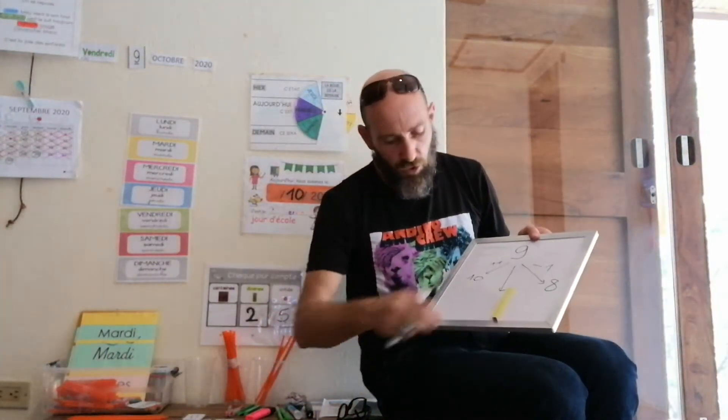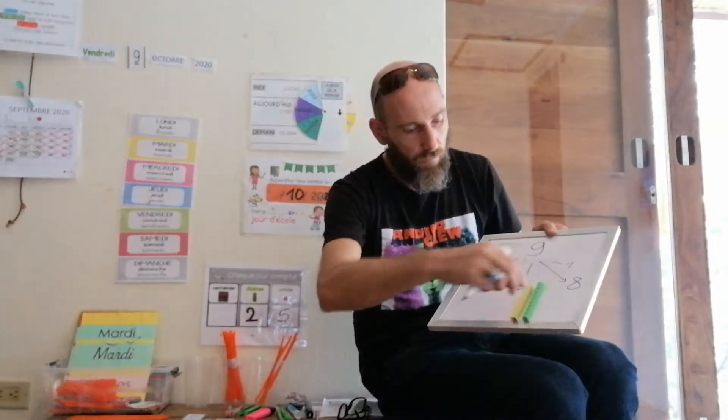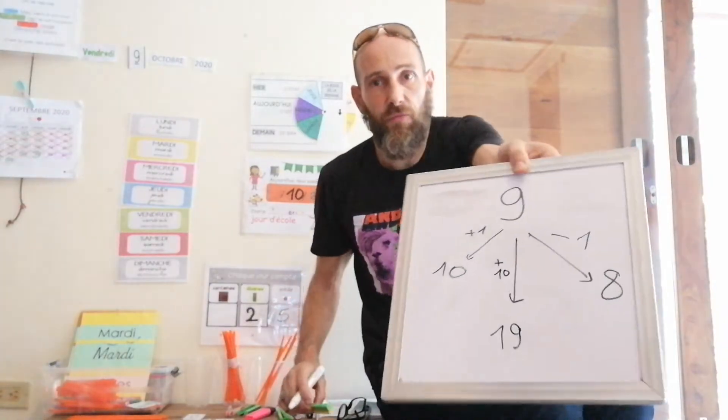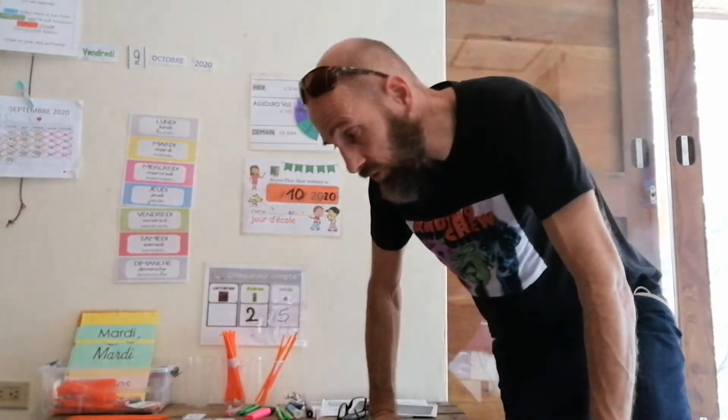De la même façon, si j'ai mes 9 cubes, voilà, j'ai 9 cubes. Si je rajoute 10, eh bien, j'obtiens 9 plus 10, ou 10 plus 9 égale 19. Voilà, une dizaine et 9 unités. Tu vois que nous manipulons les nombres pour les rendre compréhensibles et pour aussi donner du sens au lien.